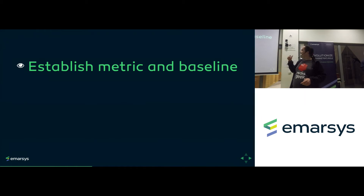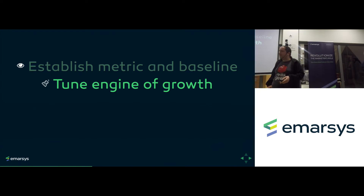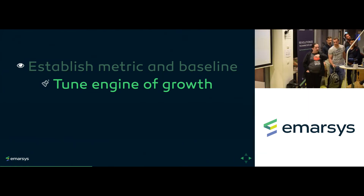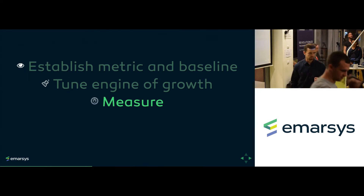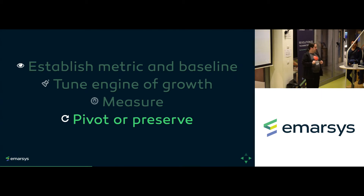Then you're tuning the engine of growth — a concept in Lean Startup. You have three kinds of growth engines: viral, subscription-based, and a third one. The point is we want to do something that ensures we are growing, then measure if whatever we changed actually made our growth faster. After that, we either pivot or persevere. Pivot means we change the direction of the company.